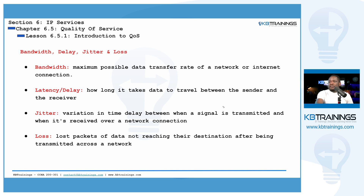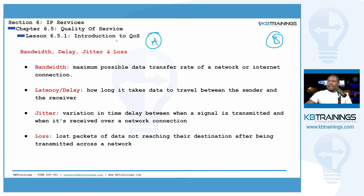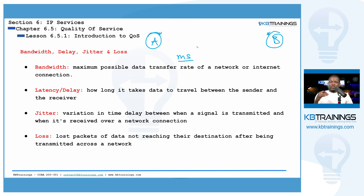The second parameter is latency or delay. This is the time it takes a packet to go from point A to point B in the network. Let's say we have a web client A trying to get a page from web server B. The time between when the packet leaves the client and gets to the server is called the latency, and it's usually measured in milliseconds. For applications like voice over IP, latency should preferably be less than 150 milliseconds.